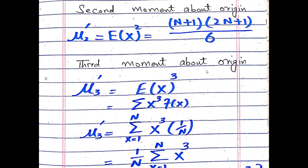The third moment about the origin, μ₃', is equal to E(X³). By definition for discrete distributions, we write it as the summation of x³ · f(x), where f(x) is the PDF of the distribution. The PDF of the discrete uniform distribution is 1/N.